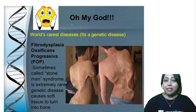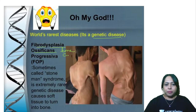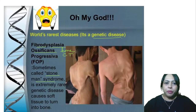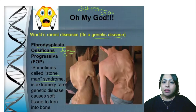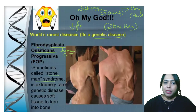Next is the world's rarest disease — it is a genetic disease called fibrodysplasia ossificans progressiva. You can see the bones, cartilage, and connective tissue are all affected. It is also called Stoneman's syndrome — a very extremely rare genetic disease. It causes all the soft tissues in your body, like connective tissue and muscles, to turn into bone. So the person has no flexibility at all — that's why the name Stoneman.